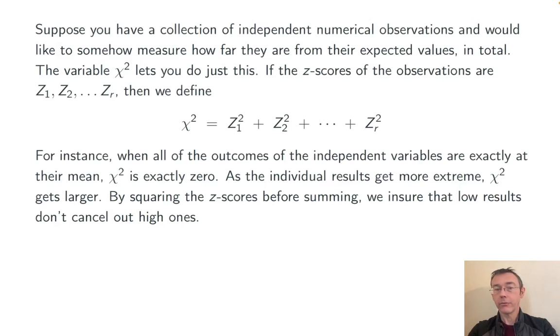For instance, if all of those observations were exactly at the expected value, then the chi-squared statistic would be zero. And if the results were further away, more extreme, then that chi-squared value would get bigger and bigger.